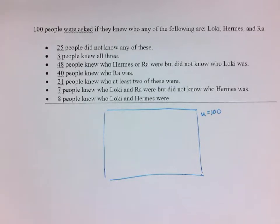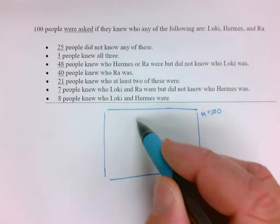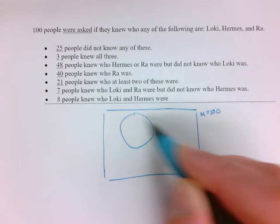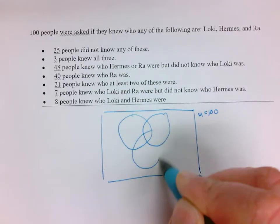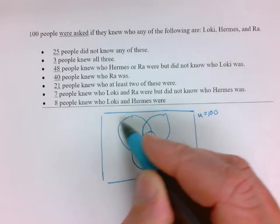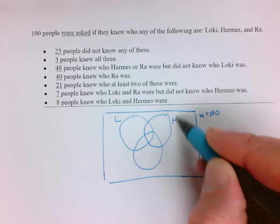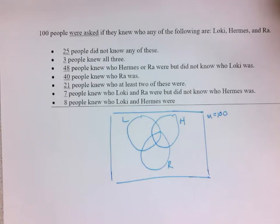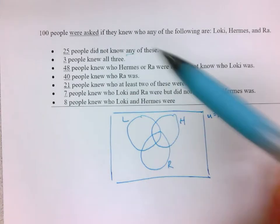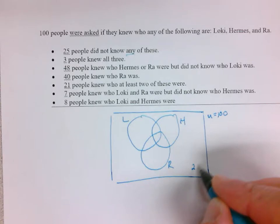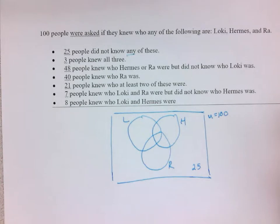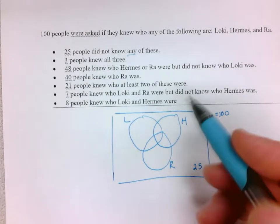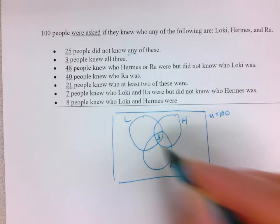I'm always gonna assume that we have this overlap and then adjust another time if I have to. So we got the three big circles. 25 people did not know any of these, so that's outside here. Quick observation: that means the three circles in here have to add up to 75 at some point. Three people knew all three.